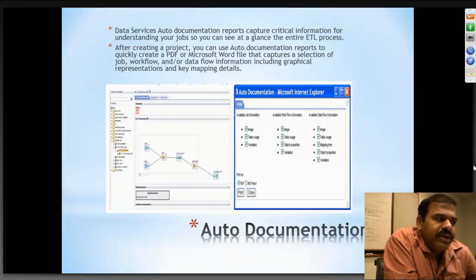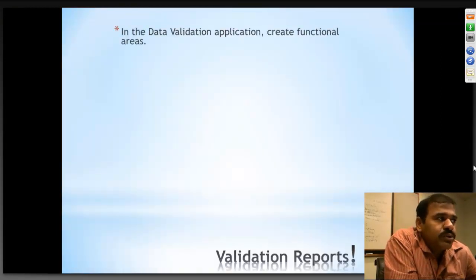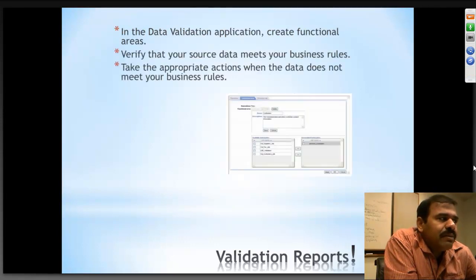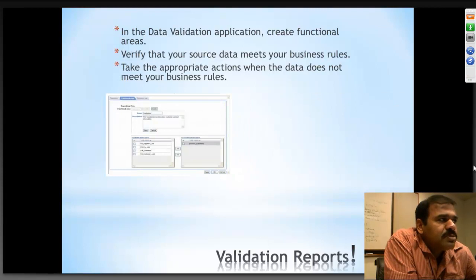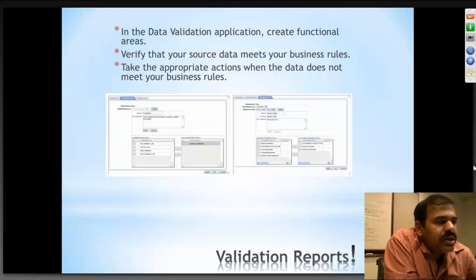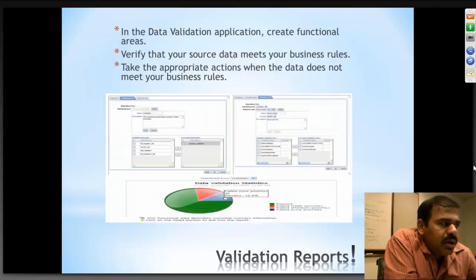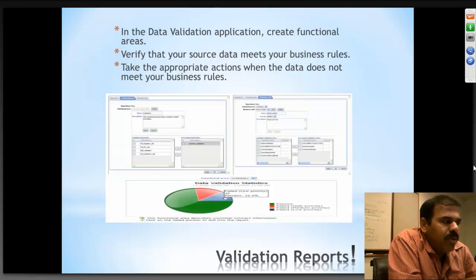You have auto documentation and also validation reports. You can create validation reports by functional area and analyze them — saying this particular functional area has loaded successfully, which jobs loaded it, whether there are any issues, and whether a particular business rule is taking too long to execute. It can also provide a data validation statistics dashboard or display it in pictorial form.